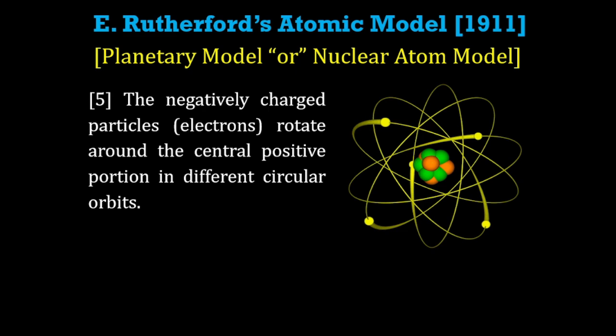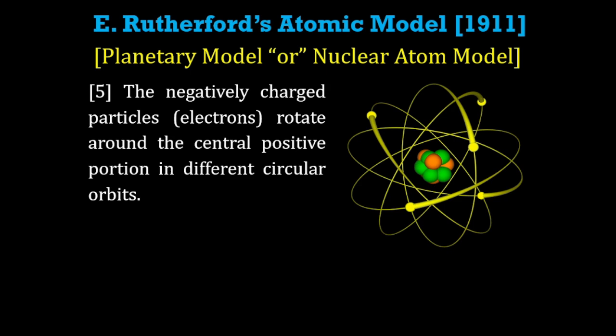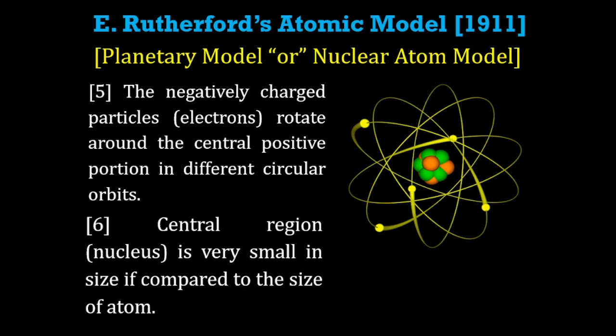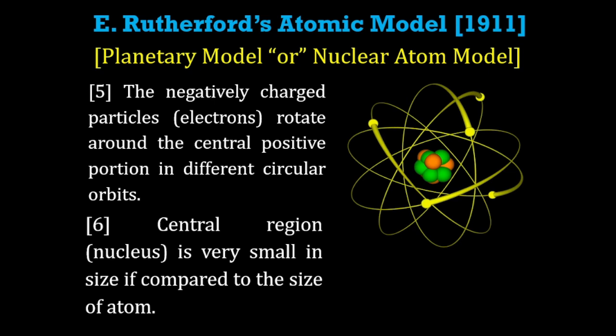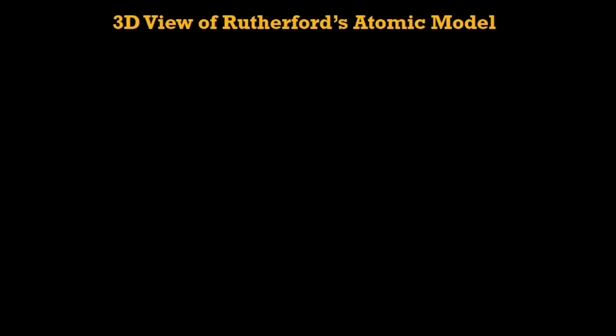The negatively charged particles, that is electrons, rotate around the central positive portion in different circular orbits. The central region, that is the nucleus, is very small in size as compared to the size of the atom.